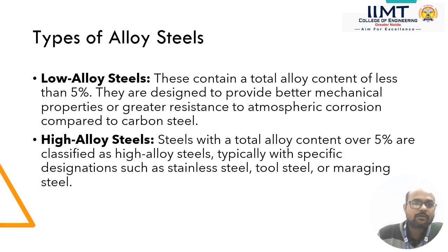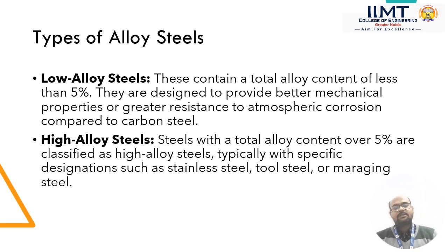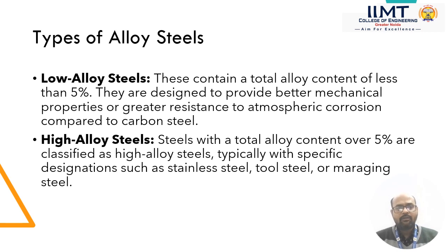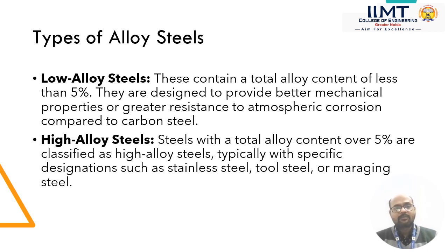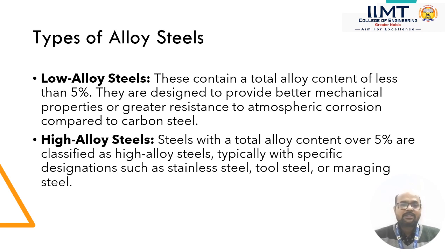There are two types of alloy steels. First one is low alloy steels and second one is high alloy steels. In low alloy steels, the alloying element content is lower than 5%. They are designed to provide better mechanical properties or greater resistance to atmospheric corrosion as compared to carbon steel. High alloy steels with a total alloy content over 5% are classified as high alloy steels, typically with specific designations such as stainless steel, tool steel or maraging steel.